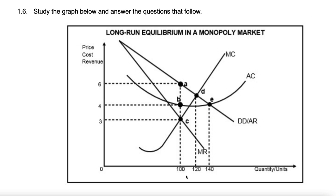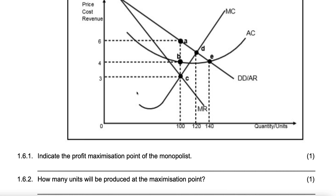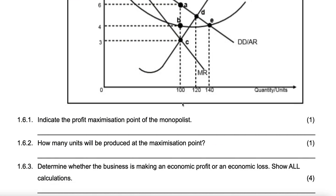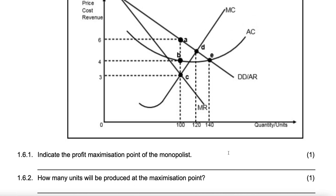Now let's go to the questions. Indicate the profit maximizing point — that's point C. How many units will be produced at the profit maximizing point? That's a straightforward question because from C, it's 100. You can't get it wrong.